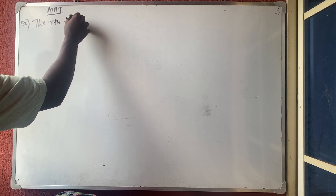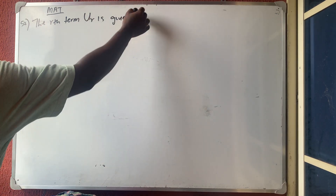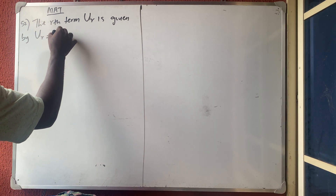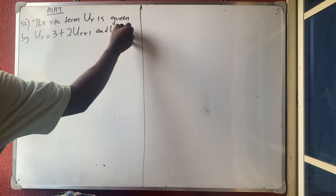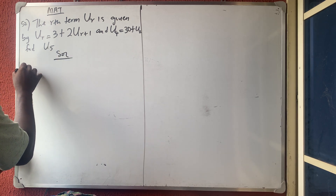Question 52: The r-th term u_r is given by u_r = 3 plus 2·u_(r+1), and u4 is equal to 30 plus u2. Find u5. This is very simple, so let's go to the solution.